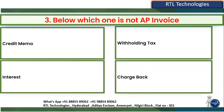The third question is: which one is NOT an Account Payables invoice? In Account Payables we have different types of invoices — around 10 to 12 types. The options given are: Credit Memo, Withholding Tax Invoice, Interest Invoice, and Chargeback Invoice.